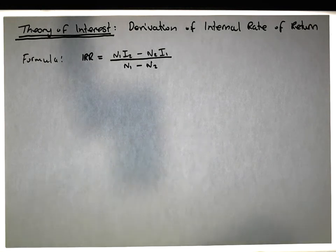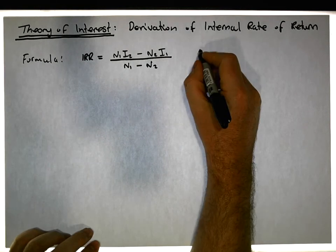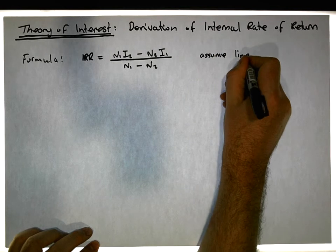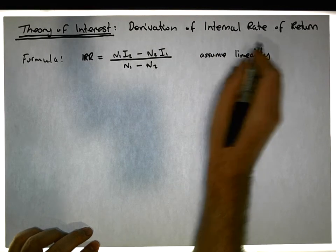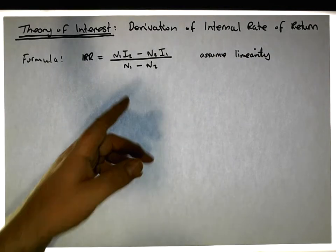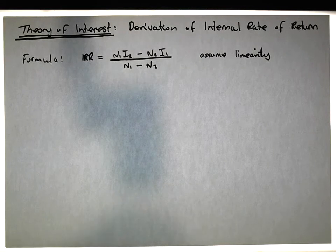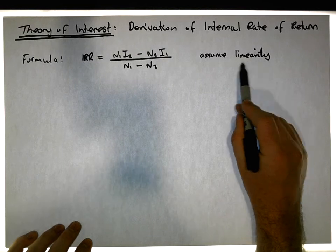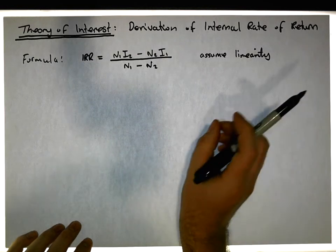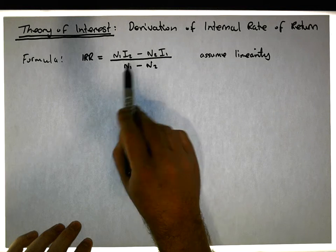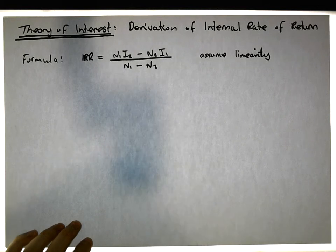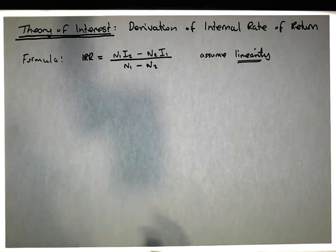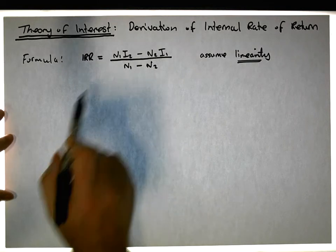So we need to derive this formula. Let's do a graph — and as part of this derivation we're going to assume linearity. Now the relationship between net present values and interest rates isn't necessarily linear, but we'll achieve linearity by reducing the difference between our two interest rates. So we're assuming linearity for this derivation.